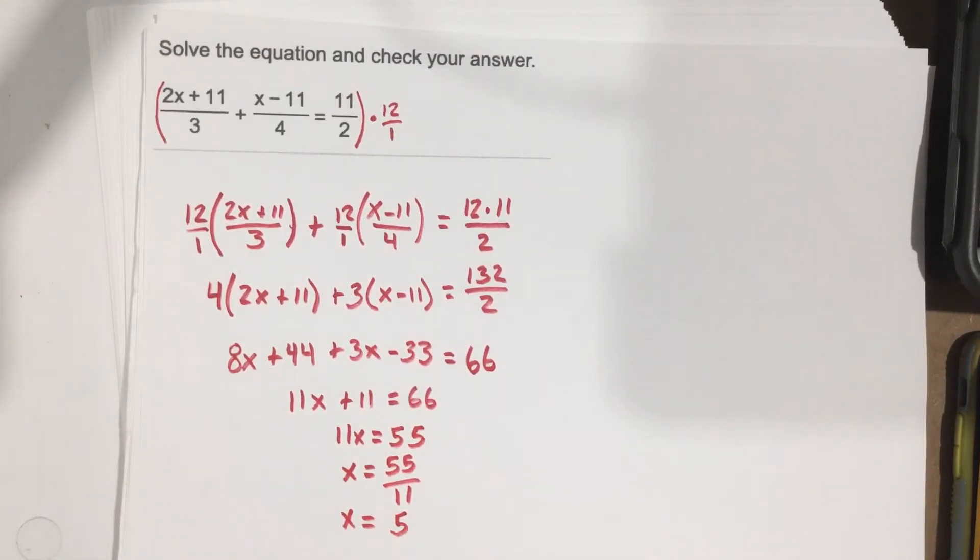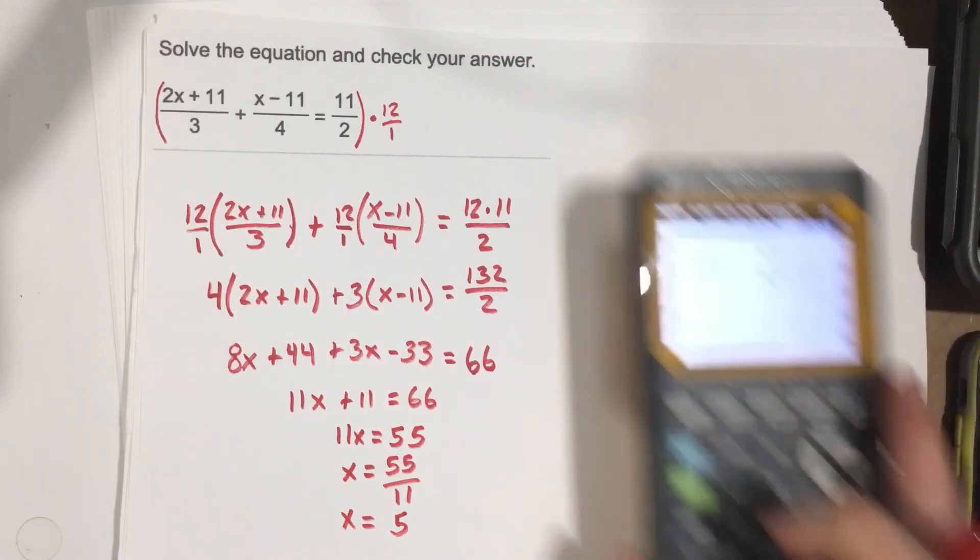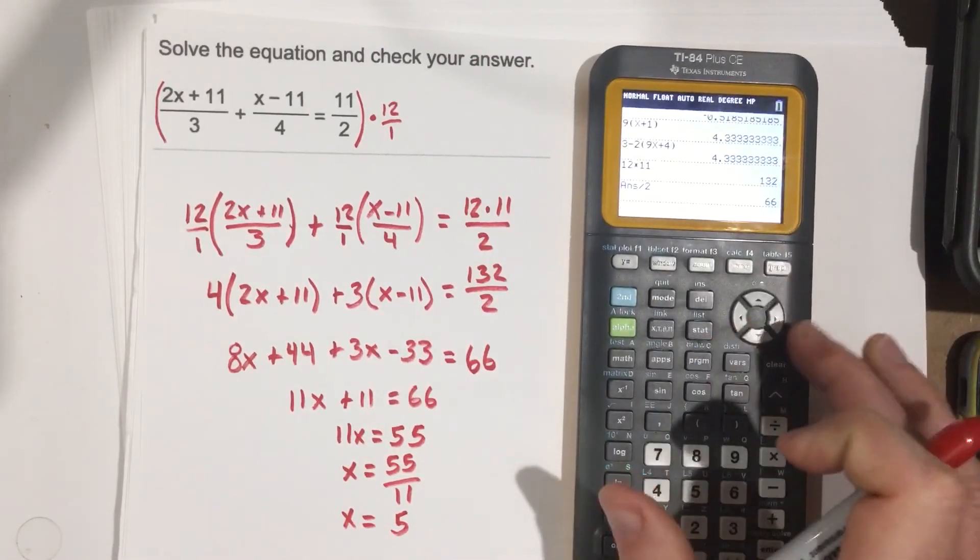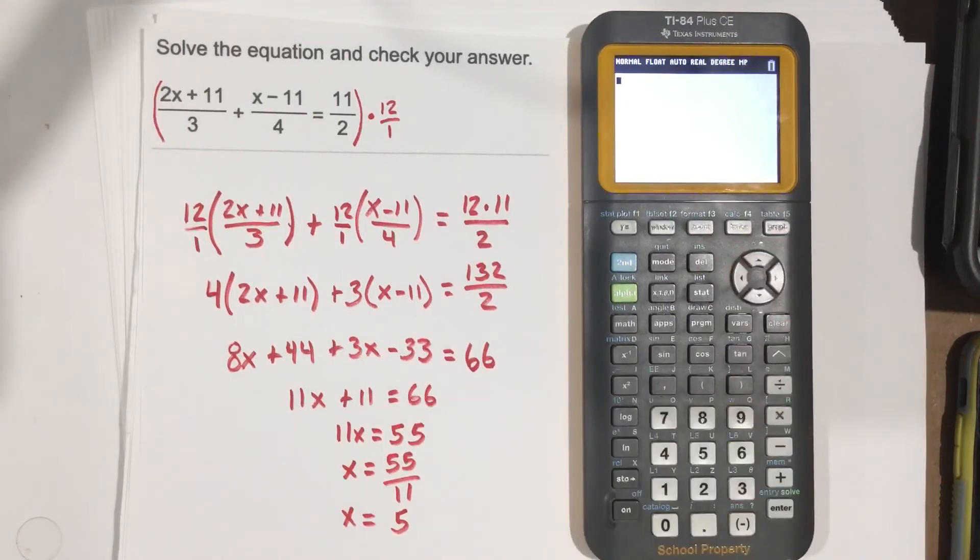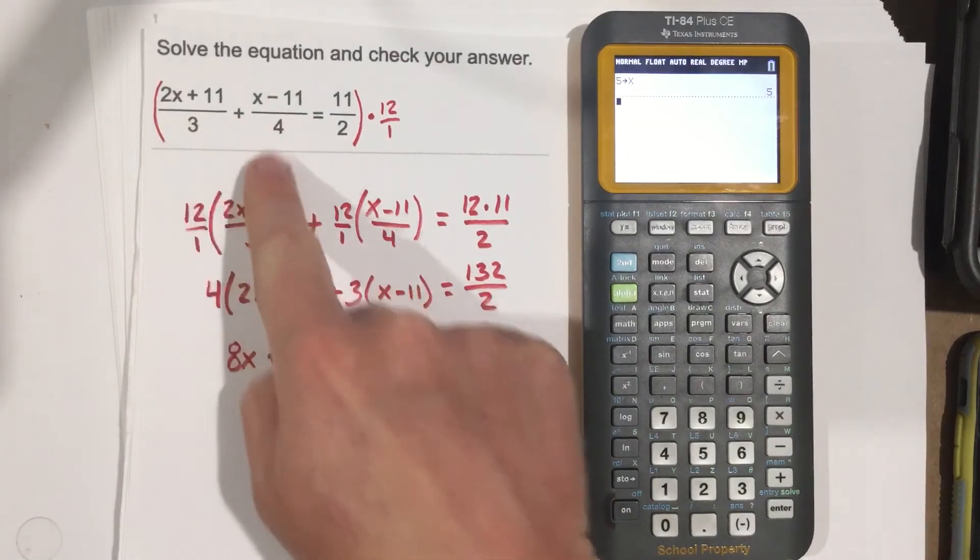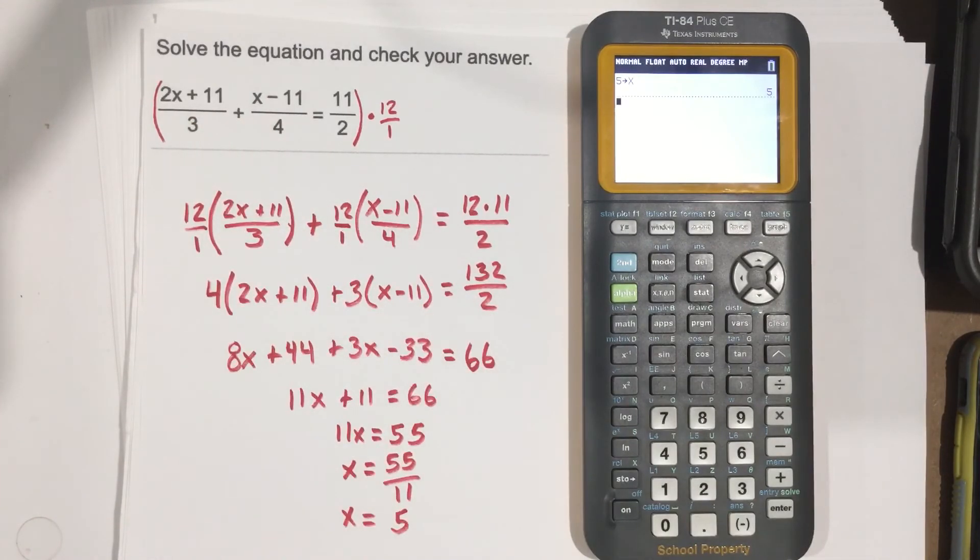Now we need to check our answer. This is where we bring the calculator back out. Let's use the store button to make this easy. We're going to take our answer of 5 and store it as x. Now we can start to write this equation out.